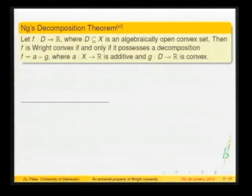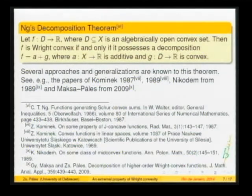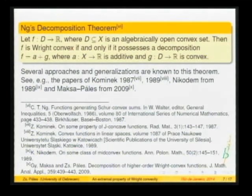The most important result related to right-convexity was established by Ng, presented at a conference in Oberwolfach in 1987. As noted, any function of the form A plus G, where G is convex and A is additive, is right-convex. More surprisingly, Ng's theorem establishes that this is exactly the structure of right-convex functions: if F is right-convex, then there exists an additive function A and a convex function G such that F equals A plus G.